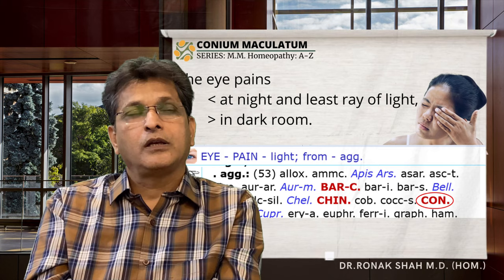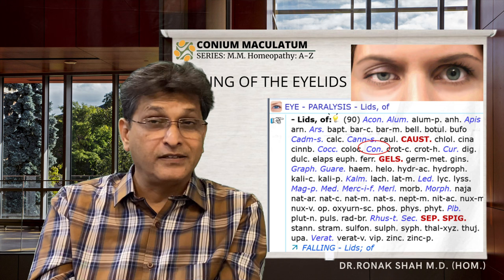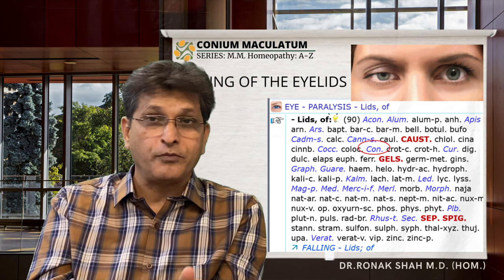Conium is one of our best remedies for falling of the eyelids (ptosis), as are other remedies like Gelsemium, Causticum, Sepia, and Spigelia. Conium is also one of them.